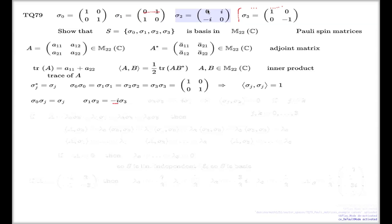This row by this column is negative i. This row by this column is 0, this row by this column is 0, and the last row and the last column is i. It's exactly negative i times sigma 3 matrix.